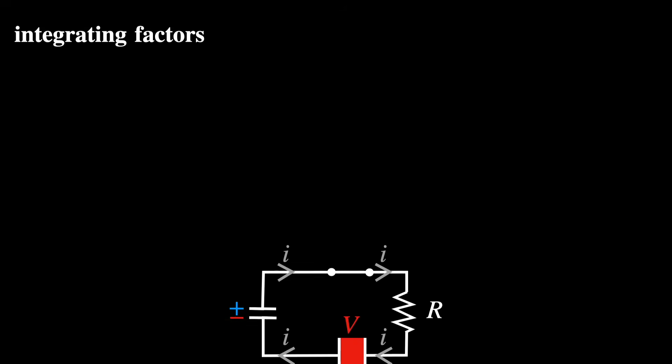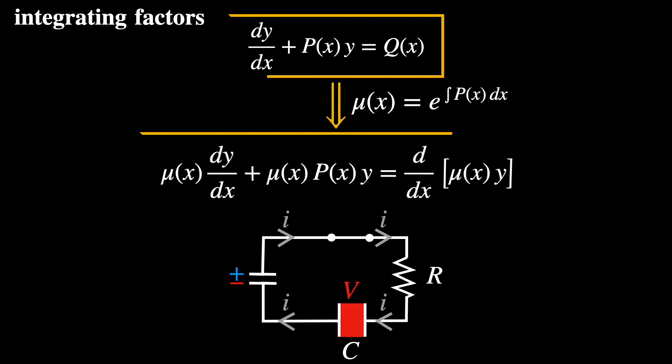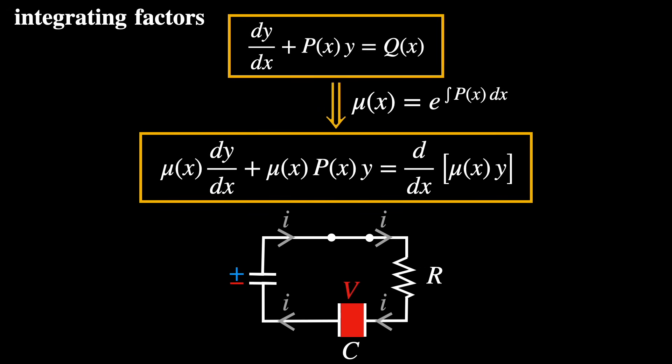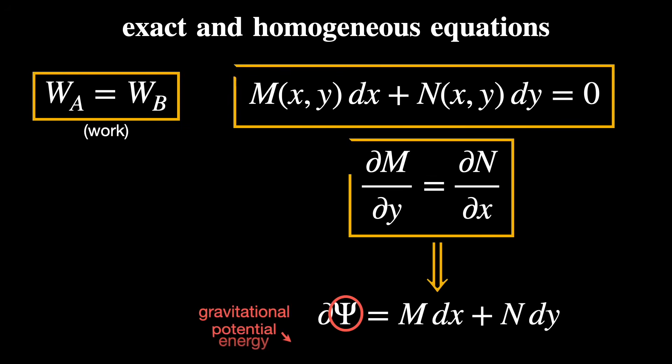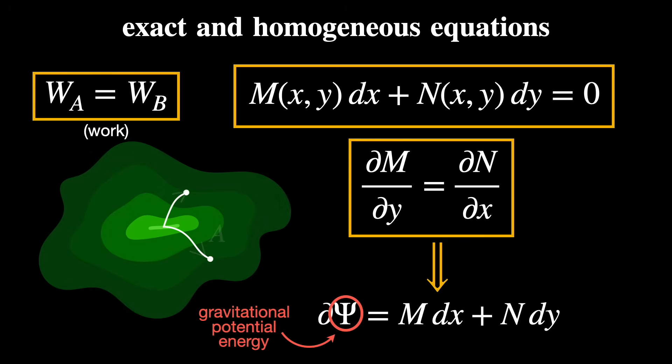You should also know how to use integrating factors, like in this resistor-capacitor circuit that is discharging and charging in a periodic fashion. And you should also know methods for exact and homogeneous equations, like when studying problems involving gravitational potential energy. This is a pattern recognition game. Once you spot the structure, you know which method you need to use. But first, you need to train your eyes to do it.